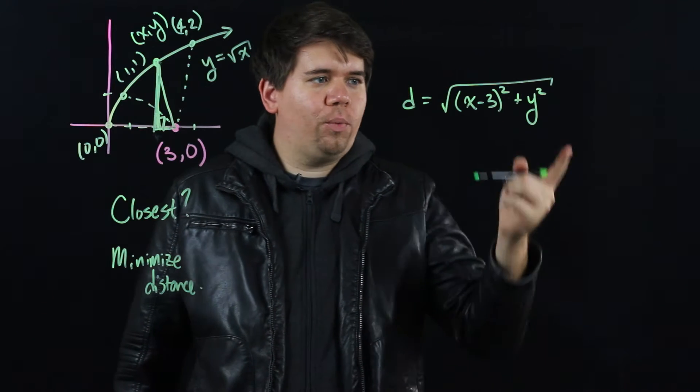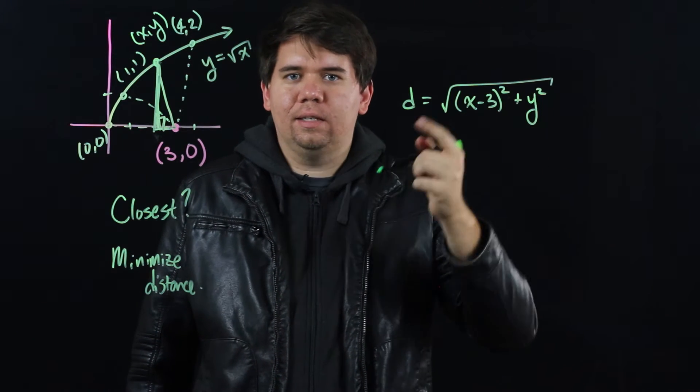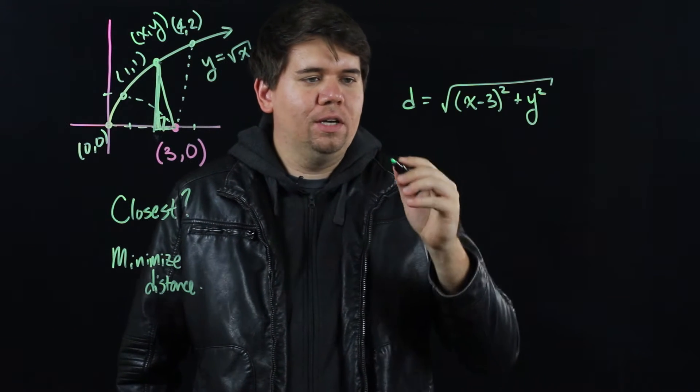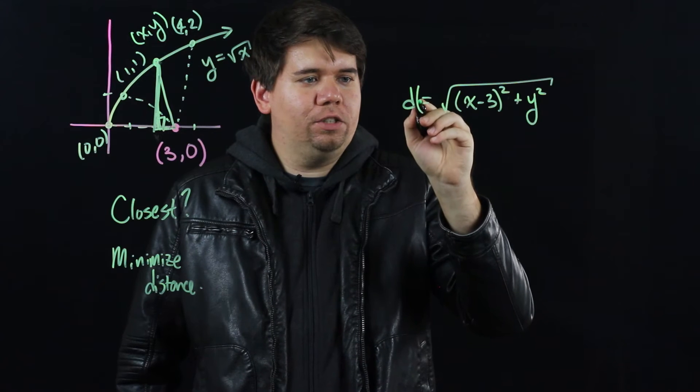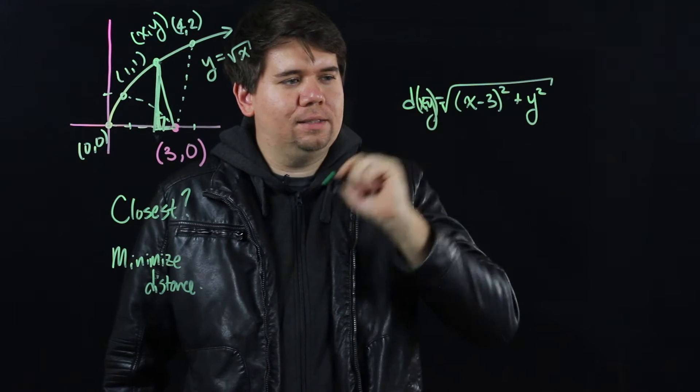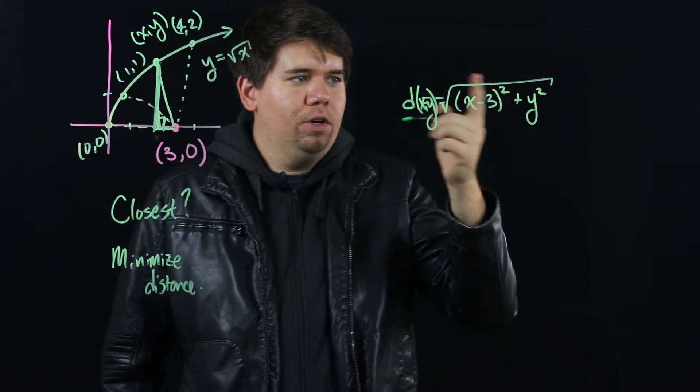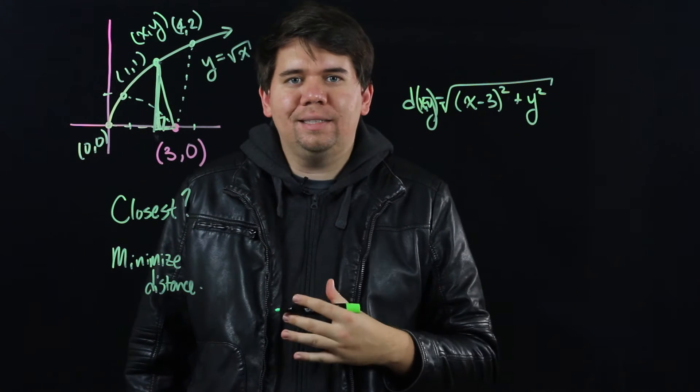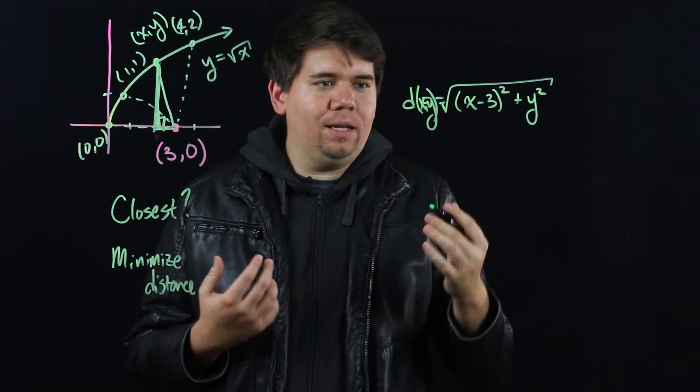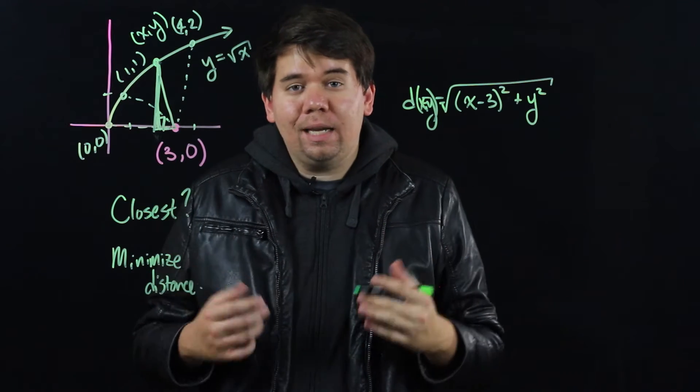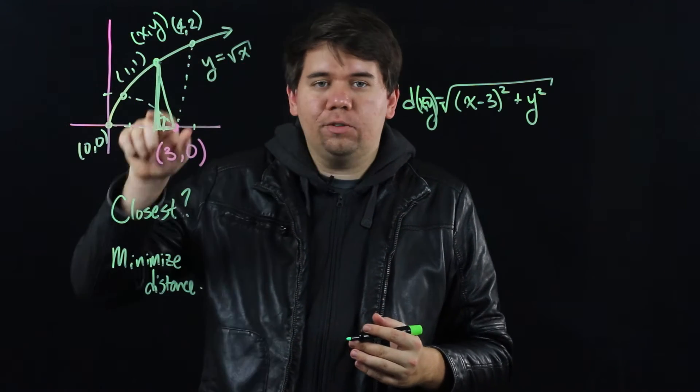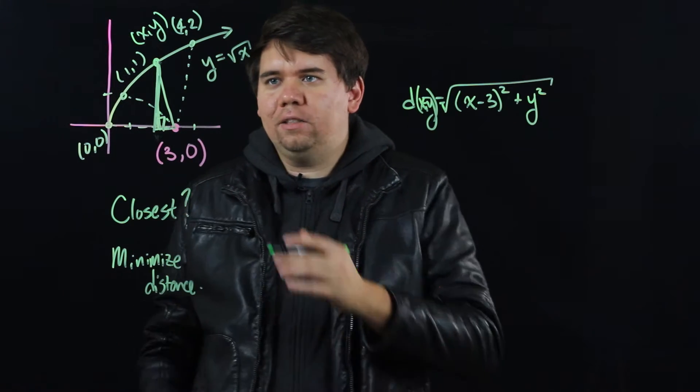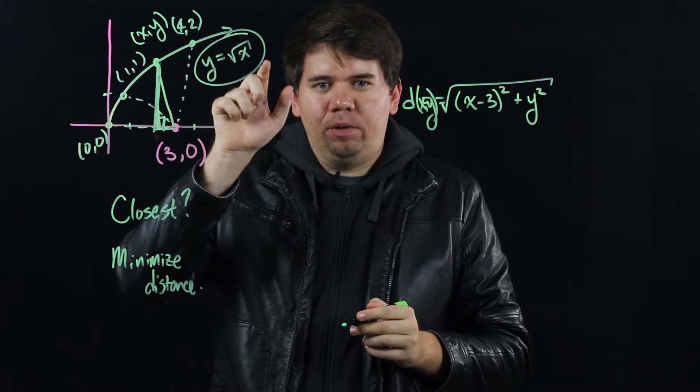So we want to minimize this function. But again we run into a problem. Notice this is a function of two variables. Right now your d is a function of both x and y. And so to find the derivative, I first need to make it a function of one variable. I need some kind of constraint. What's constraining the values of x and y? Well we said that point (x,y) has to be on this graph. It can't just be some random point out in the universe. So in particular it must satisfy this relationship that y equals the square root of x.